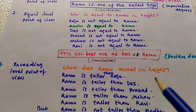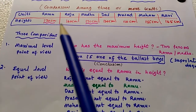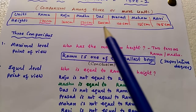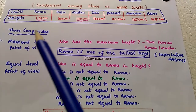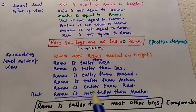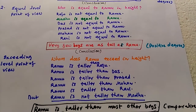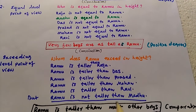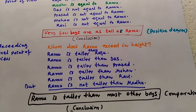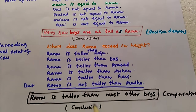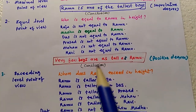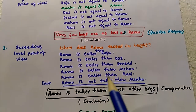From the exceeding level point of view, Ramu exceeds the height of Raju, Das, Prasad, Mohan, and Ravi. Ramu is taller than each of them. However, Ramu and Madhu have equal heights, so Ramu is not taller than Madhu. The concluding sentence is: Ramu is taller than most other boys. This is called the comparative degree.